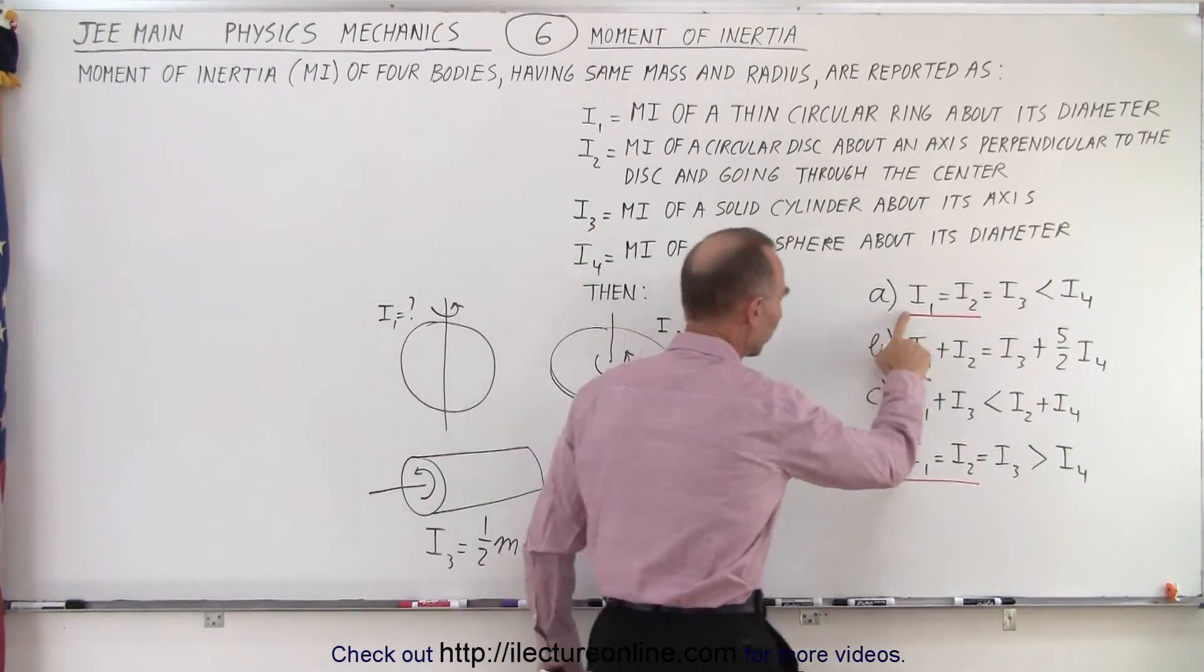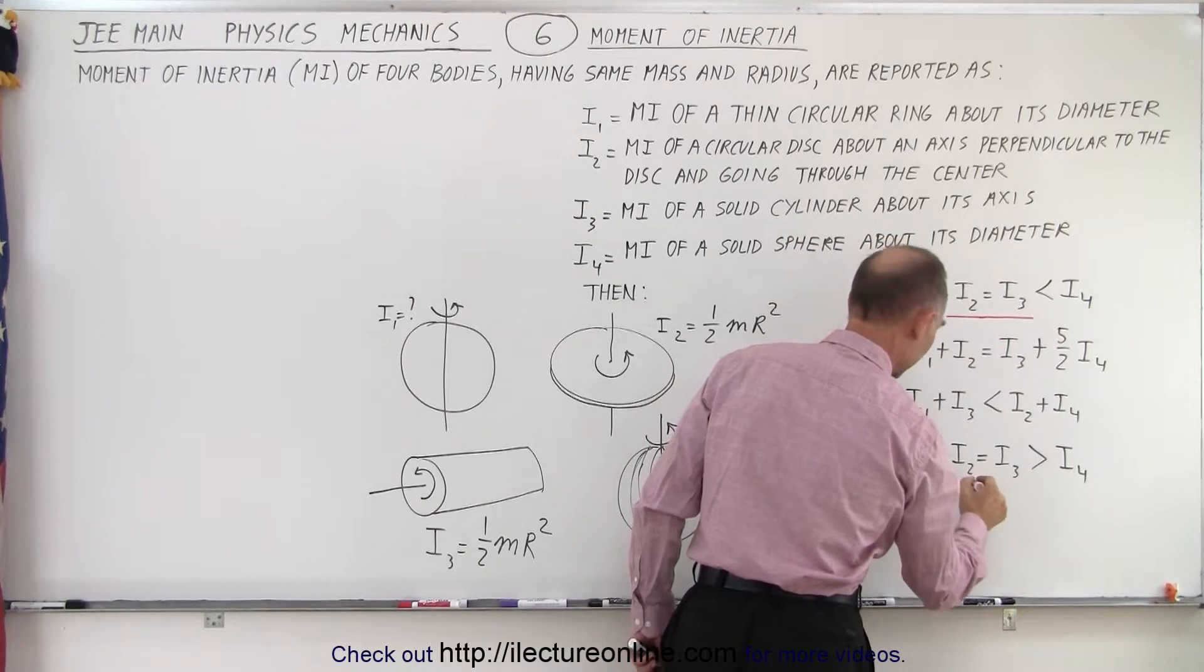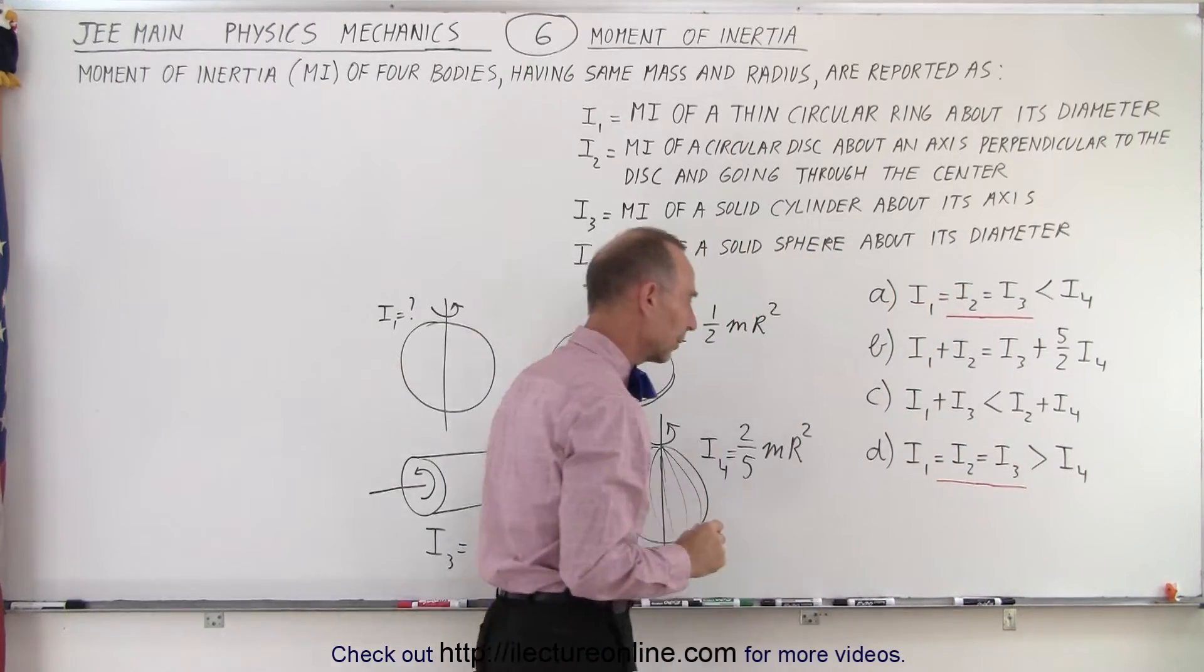Oh no, we don't know what I1 is. Sorry. It makes this correct and same over here. It makes this correct. So we know that I2 and I3 are equal.